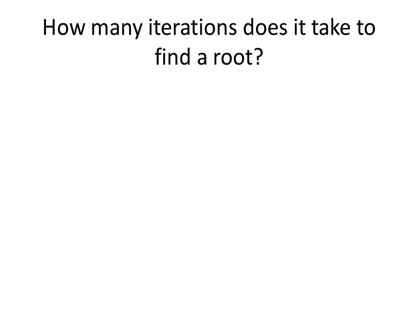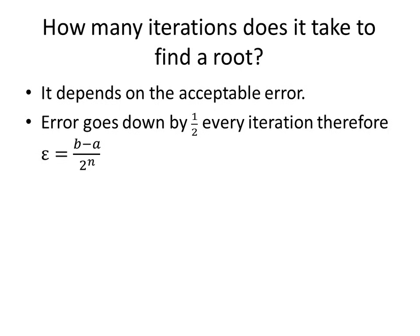So how many iterations does it really take to find a root? Well, it's just going to depend on how accurate you want your root to be. And since we know the error is going down by half every time, then we can say the error epsilon is equal to b minus a over 2 to the n.